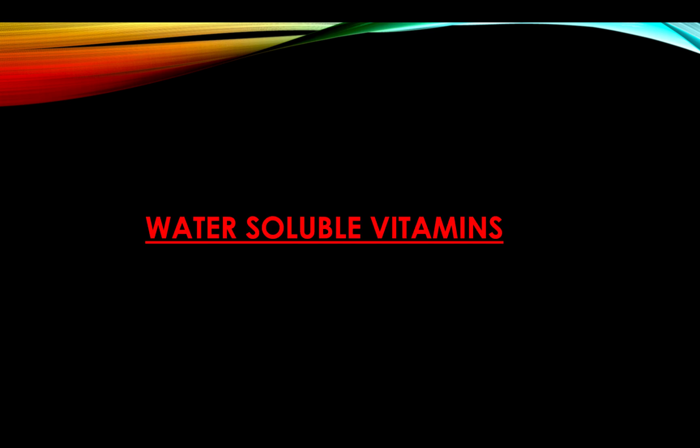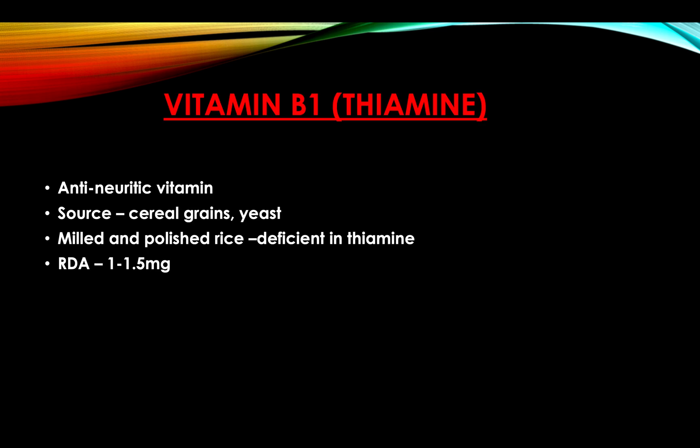First, water-soluble vitamins. Vitamin B1, or thiamine, is also known as the anti-neuritic vitamin. Sources include cereal grains, yeast, milk, and polished rice. RDA is 1 to 1.5 milligrams.